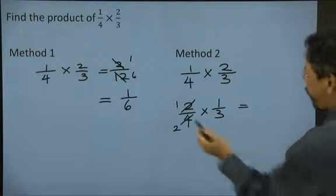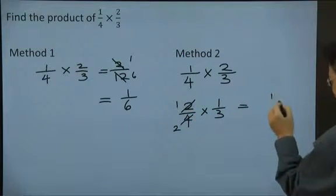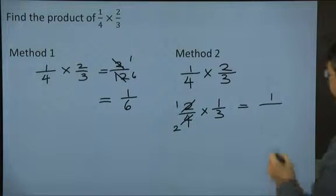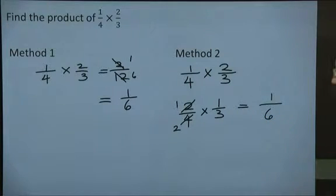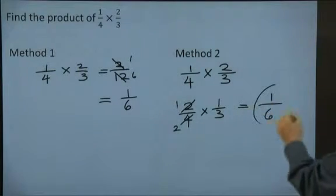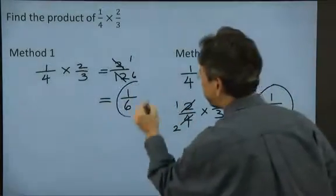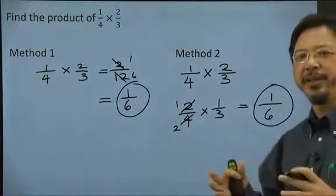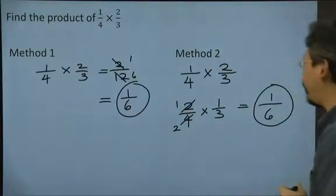So, this gives me one times one, one, and two times three, giving me six. Notice how the answers are the same. Slight variation in method, but they work out to be the same thing.